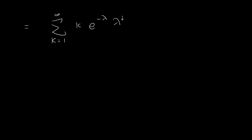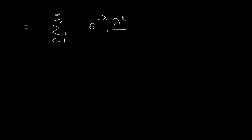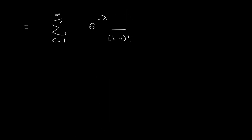Everything remains the same inside the summation sign. We have lambda to the power of k divided by k factorial, and we can combine the k and k factorial terms: instead of writing k factorial, we write k minus 1 factorial. And instead of lambda to the power of k, we write lambda to the power of k minus 1, then put the remaining lambda term outside the summation bracket.